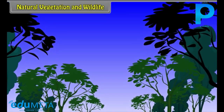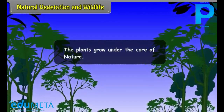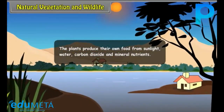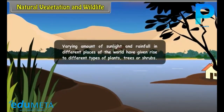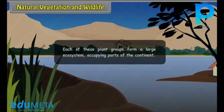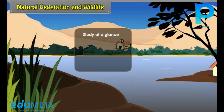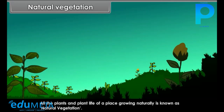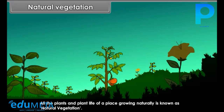Natural Vegetation and Wildlife: The plants grow under the care of nature. The plants produce their own food from sunlight, water, carbon dioxide and mineral nutrients. Varying amounts of sunlight and rainfall in different places of the world have given rise to different types of plants, trees or shrubs. Each of these plant groups forms a large ecosystem occupying parts of the continent.